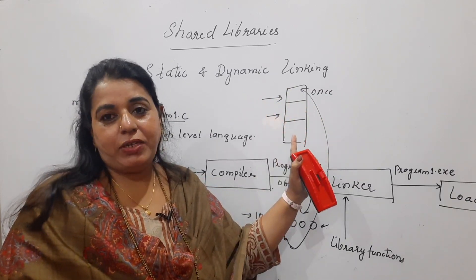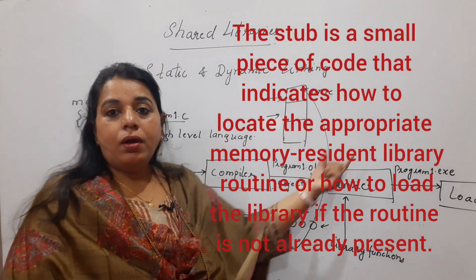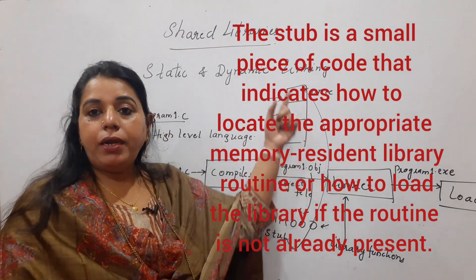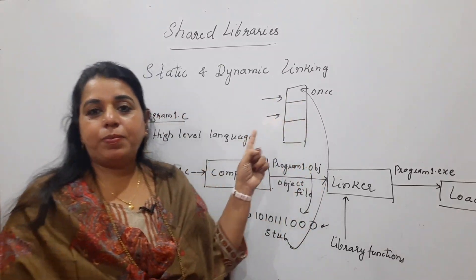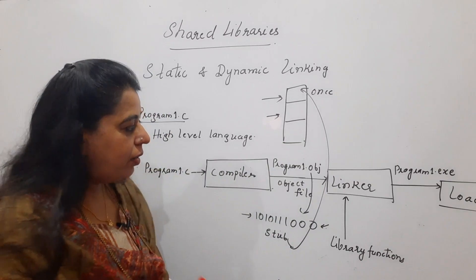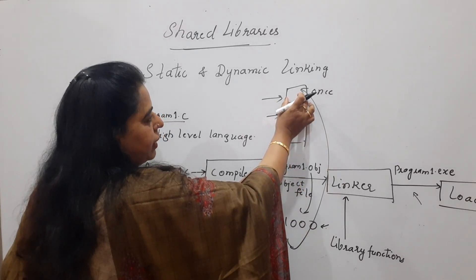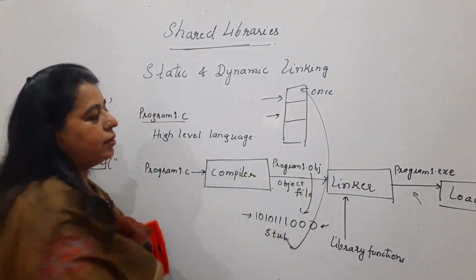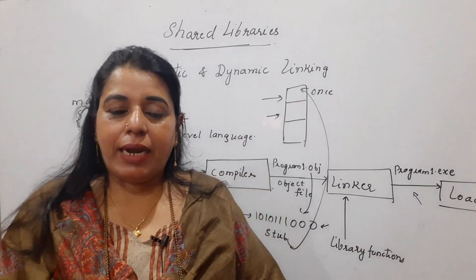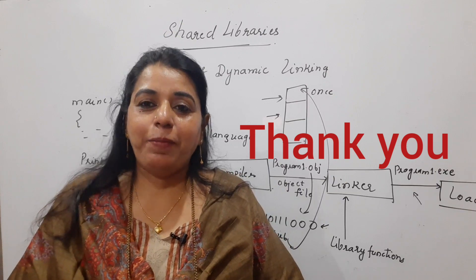If the library function is not yet in main memory, the stub's job is also to bring that library module from the hard disk into main memory. So the stub has two roles: point to the memory address where the library function is present, and if not present, bring it from disk to memory. Since the library functions present in memory can be used by all programs, we call them shared libraries. This is the idea behind shared libraries, also studied under static linking versus dynamic linking.